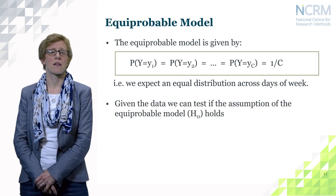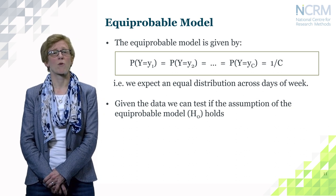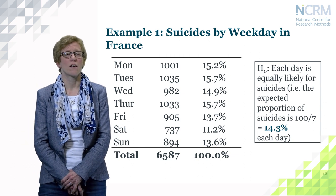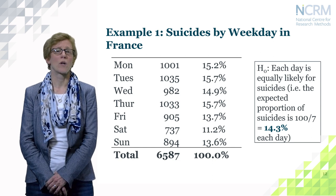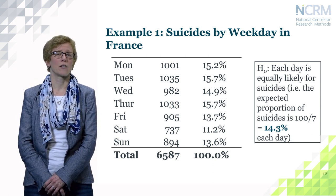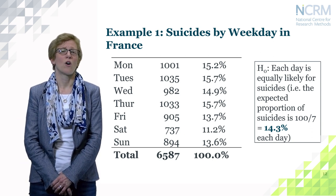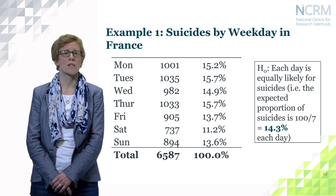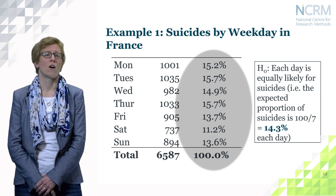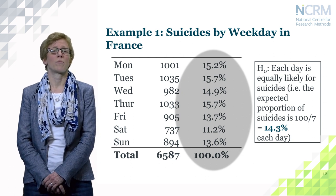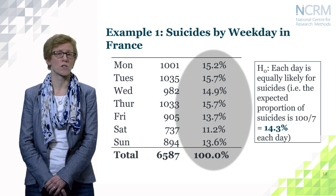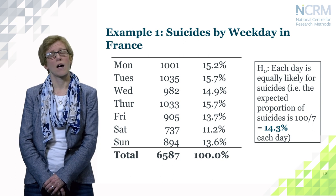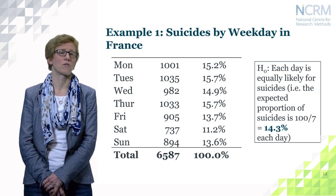Given this data we can test the assumption of the equiprobable model — H0 that this assumption holds. For the suicides-by-weekday example, H0 means each day is equally likely for a suicide to occur, so the expected proportion is 100 over 7 — about 14% per day. Looking at the observed distribution in the third column, it diverges a little from 14% per day, but perhaps not by very much, and we may be satisfied with the assumption. To assess this properly you would need a formal test, which I will explain in the next session.